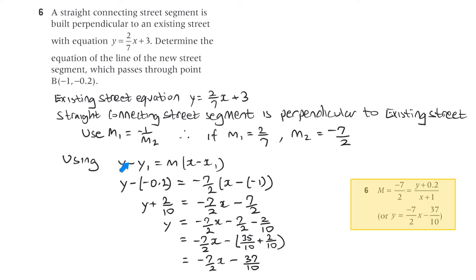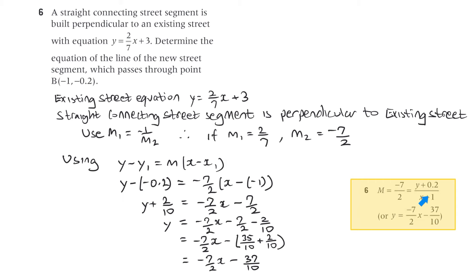Using the point-gradient form y minus y1 equals m times x minus x1, substituting y1 equals minus 0.2, x1 equals minus 1, and m equals minus 7 on 2, the equation of the new street segment comes down to y equals minus 7 on 2 x minus 37 on 10.